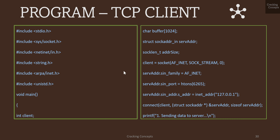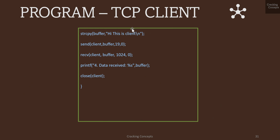Now looking at the TCP client: we use the same steps. I have the client file descriptor and the sockaddr_in structure initialized with the same values. The next step is to send a connection request to the server using connect, passing the file descriptor, pointer to the structure, and its size. Then the client copies its message to the buffer using strcpy and sends it using send (file descriptor, buffer, size of string, flags 0). The client then waits for a message from the server using recv, with the full buffer size since the response size is unknown, and 0 flags. It prints the received data and finally closes the socket.